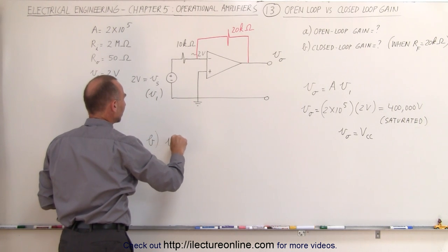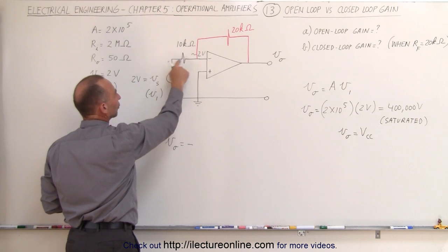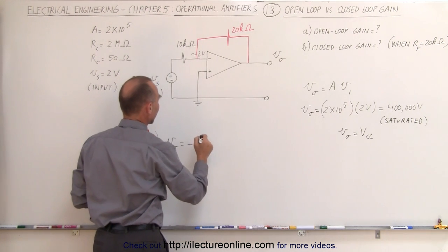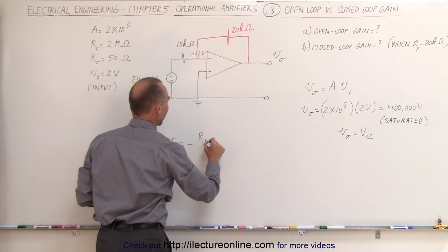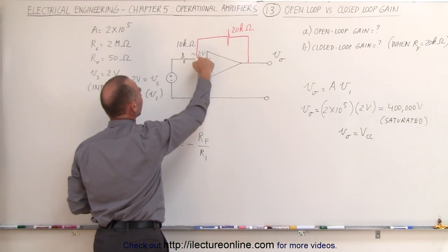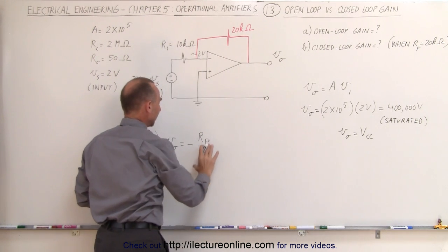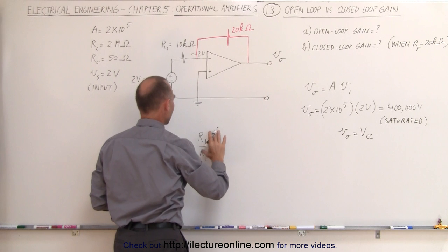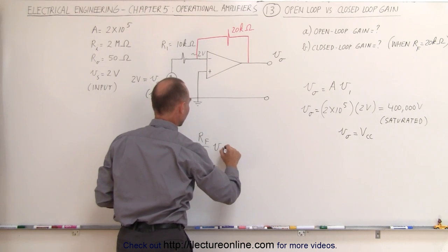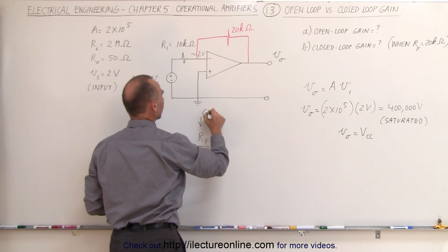we can say that the output voltage is going to be equal to the negative, because we have the source voltage here connected to the inverting terminal, it's going to be negative R_feedback divided by R1. If we call this V1 then this here would be called R1 and that would be times the input voltage V_i. This here, this quantity right here is what we call the closed loop gain.